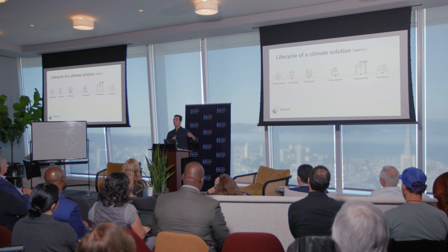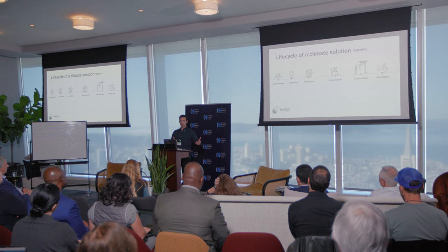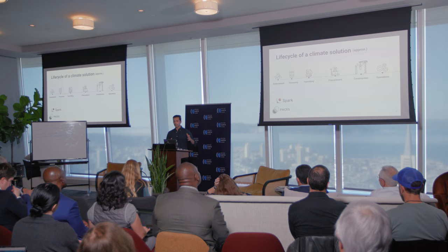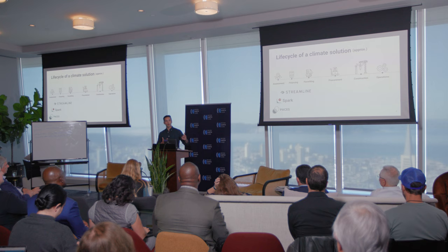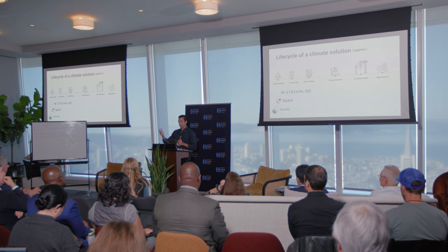I'll talk about some startups doing amazing things tackling this problem. Paces is focused on building tools for renewable project developers to do site selection faster. Spark is in a similar space — site selection and financing for project developers. Streamline is building a co-pilot for grant writers, so hard-tech companies can find which grants are most likely to succeed and speed up the cycle time for applying and winning them. Blumen Systems is designing for the geospatial analyst and land use planner to help accelerate permitting cycles.